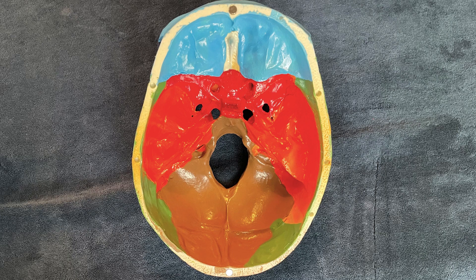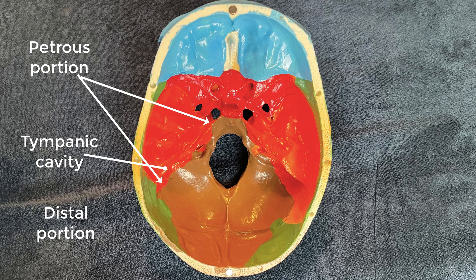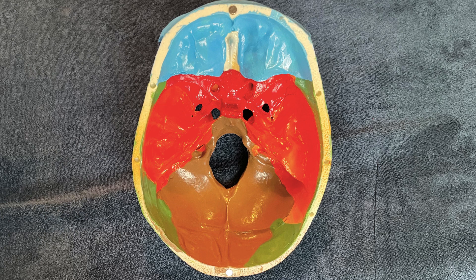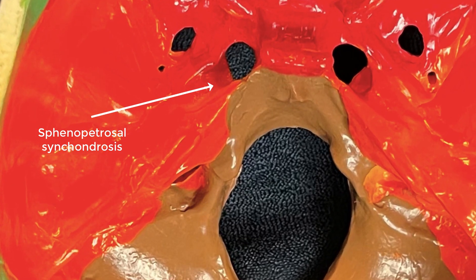If we look from a superior view down into the cranial cavity, the distal portion of the Eustachian tube starts in the bone, in the tympanic cavity, which is in the petrous portion of the temporal bone. The osseous portion of the Eustachian tube ends at the junction between the temporal bone and the greater wing of the sphenoid, an area called the sphenopetrosal synchondrosis.